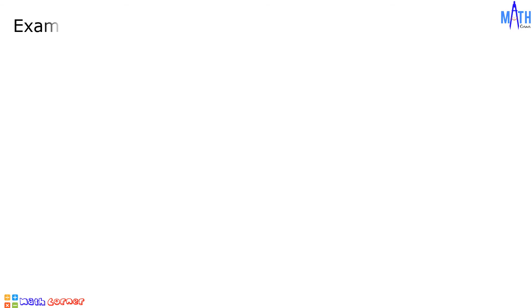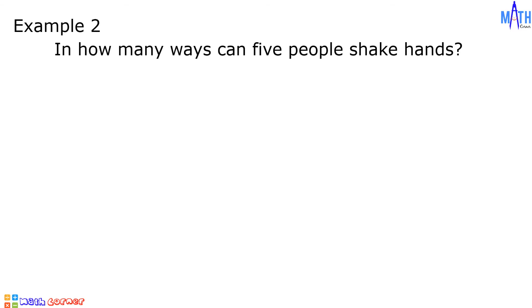Example number 2: in how many ways can 5 people shake hands? The order of the people shaking hands is not important, so this is a combination problem. Since there are 5 people, the value of n is 5. There are 2 people required in a handshake, so the value of r is 2. Again, we will be using 2 solutions.